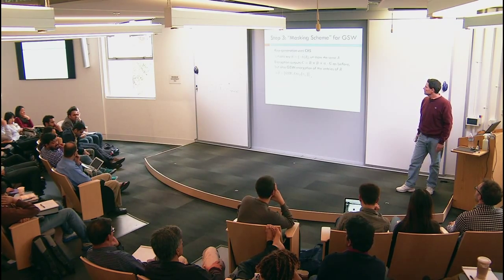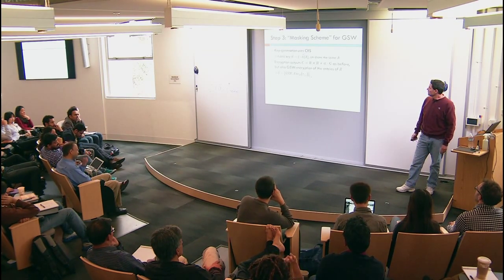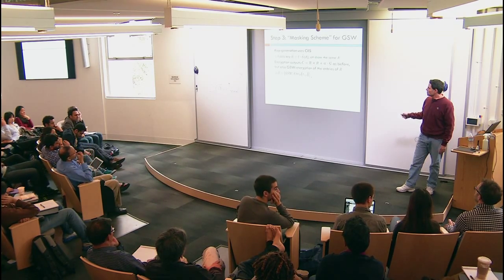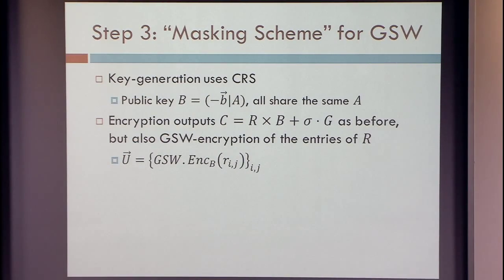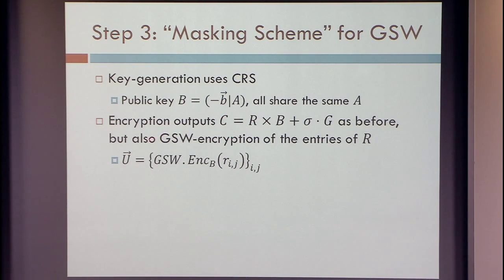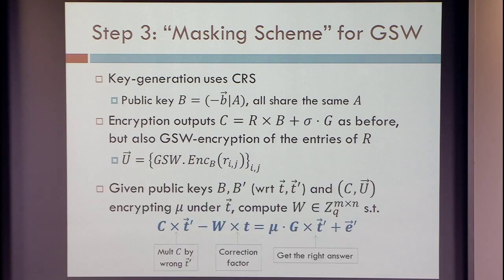So we do key generation using the common reference string. The encryption is still GSW encryption: R times the public key plus sigma times G. But we also add, for each of these matrices that we encrypt this way, GSW encryptions of each and every individual entry in our randomness matrix R. I'll refer to these additional encryptions as vector U — a vector of matrices.